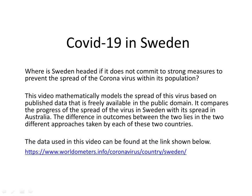Where is Sweden headed if it does not commit to strong measures to prevent the spread of the coronavirus within its population? This video mathematically models the spread of this virus based on published data that is freely available in the public domain. It compares the progress of the spread of the virus in Sweden with its spread in Australia. The data used in this video can be found at the link shown here, included in the description.